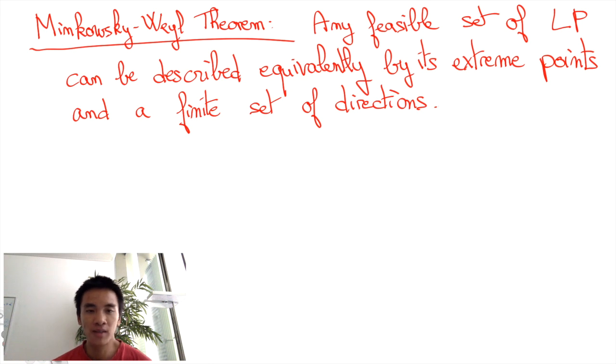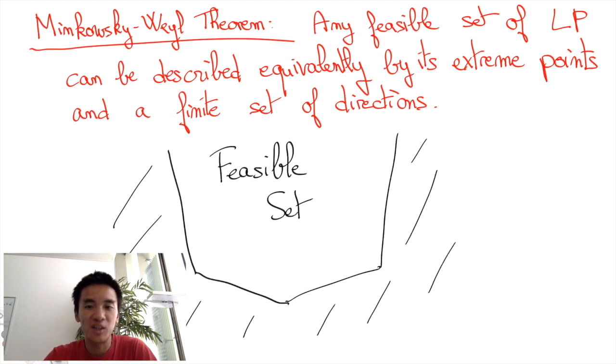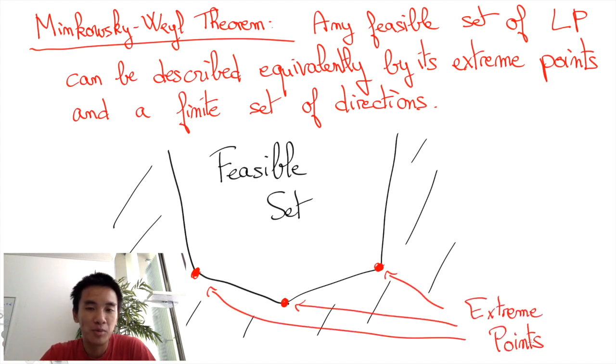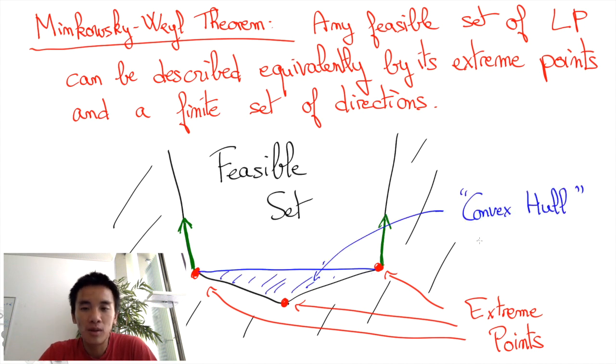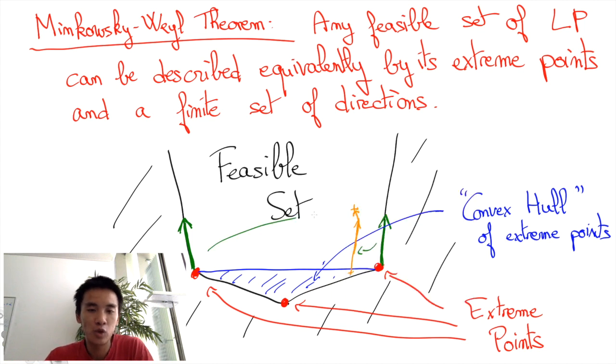Let's visualize the theorem on a figure. In this example, we have three extreme points, which are the red dots, and two extreme directions, which are the green arrows. The feasible set is then all the points in between the extreme points, and all the points that can be obtained by starting at one of the points in between the extreme points, and by then following a path that corresponds to following a certain combination of the green arrows.